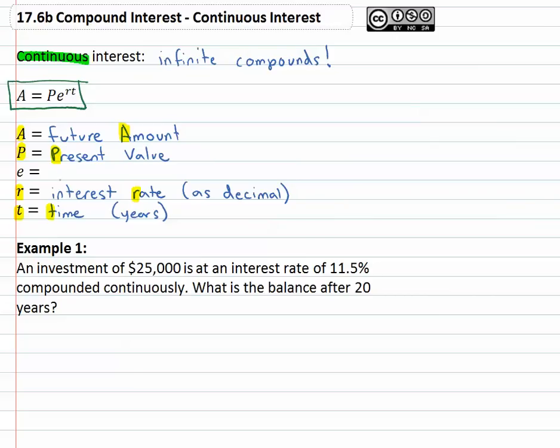E is approximately 2.71828 and it just kind of keeps going with no pattern or design to it. It's kind of similar to pi, 3.14159265, it just keeps going with no pattern to it.